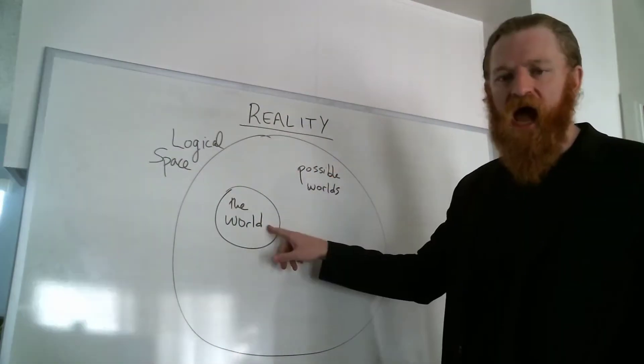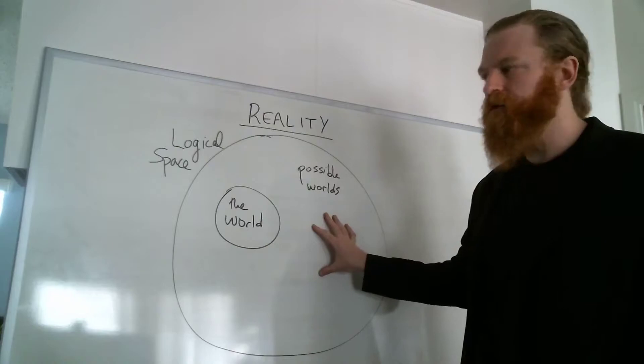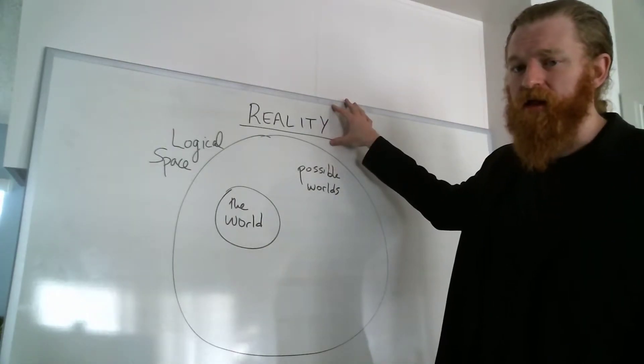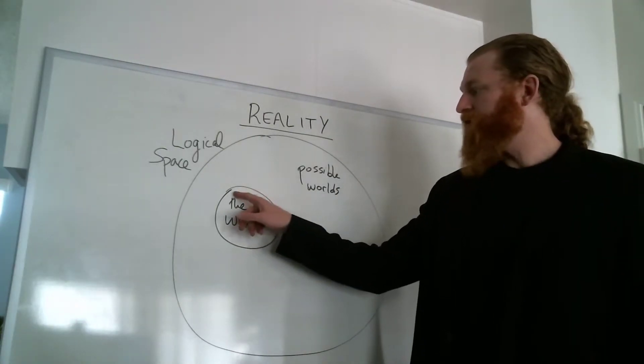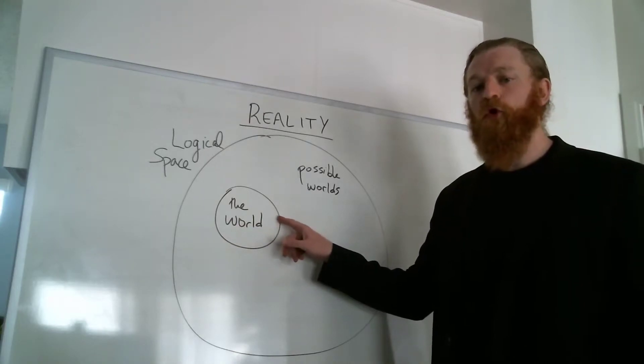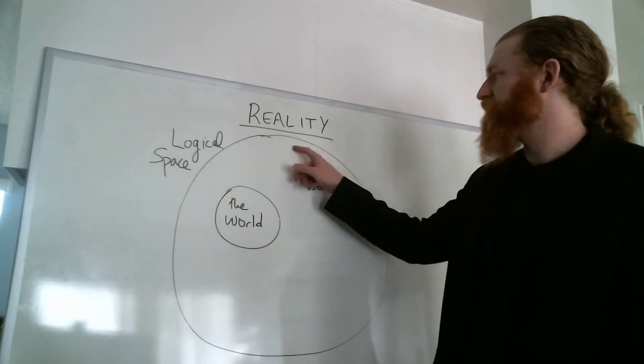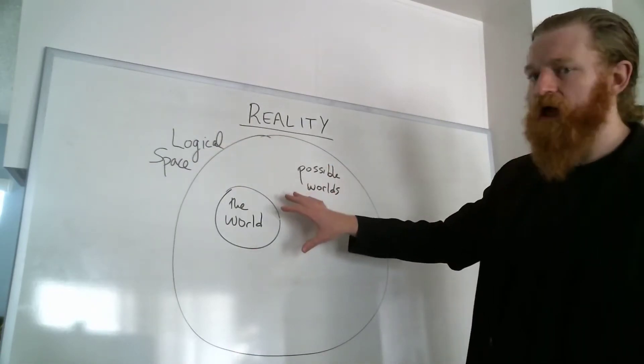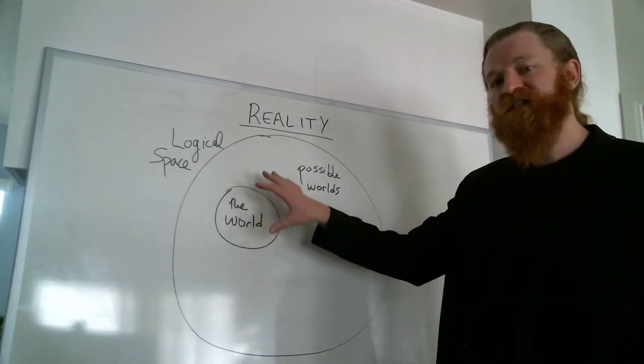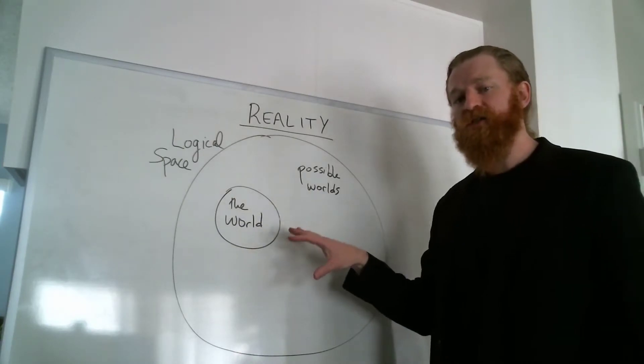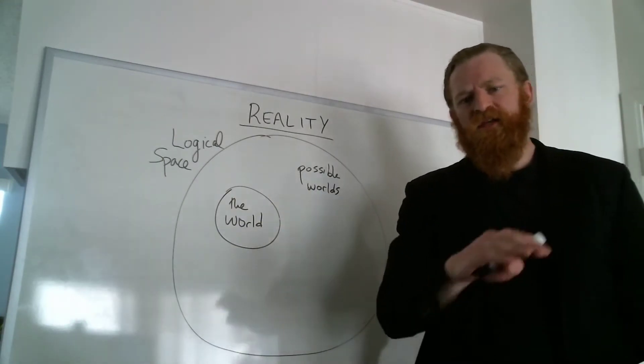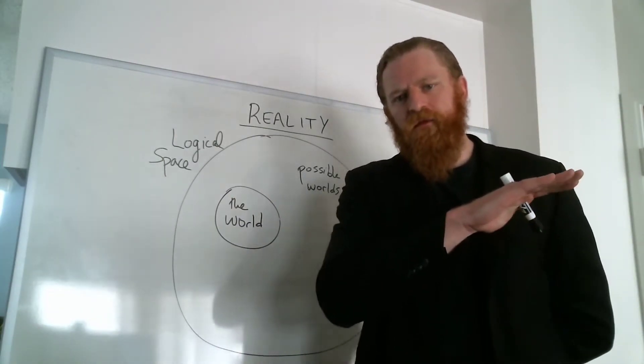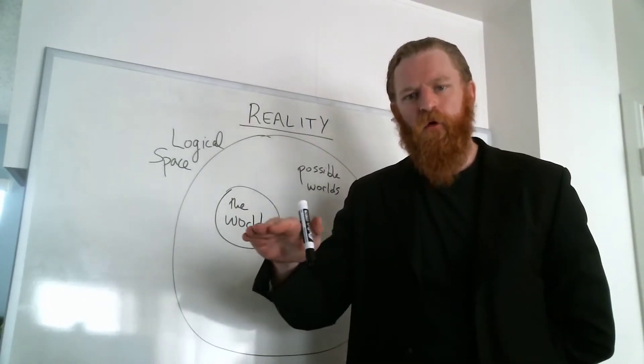The actual world combined with the possible worlds forms reality. By discovering what's true of the actual world, what we're doing is ruling out all of the other possibilities circumscribed by logical space, locating our world within the set of all possible worlds.